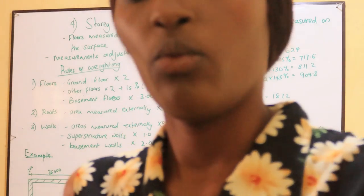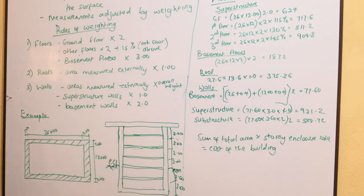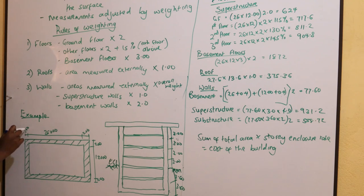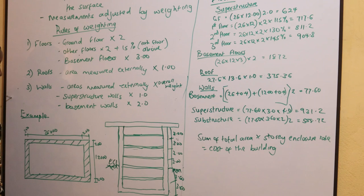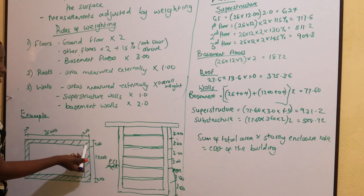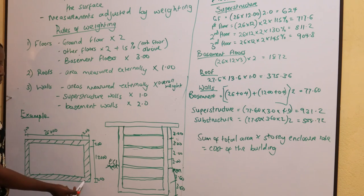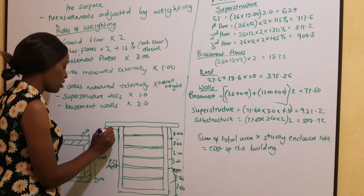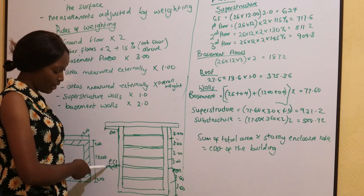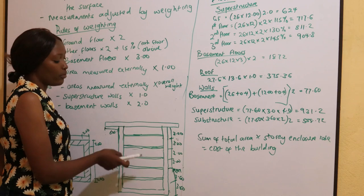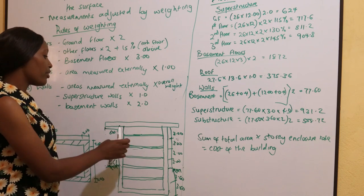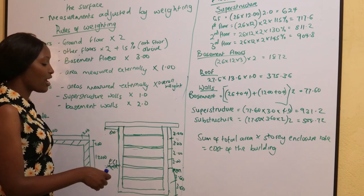We shall start by understanding the plan and section we are given. The wall thickness is 200mm, the length of the wall is 26,000mm, and the width internal dimension is 12,000mm with wall thickness of 200mm. The section shows the story heights. From ground level we have the ground floor, first floor, second floor, and third floor — each with a height of 3 meters. The basement floors are 3.6 meters each. The roof is a flat roof with an eave extension of 600mm on each side.